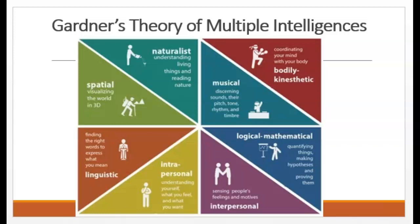Individuals who are high in naturalistic intelligence are more in tune with nature and are often interested in nurturing, exploring the environment, and learning about other species. I am not one of these people — I managed to kill a cactus once. People who are strong in spatial intelligence are good at visualizing things. These people are often good with directions as well as maps, charts, videos, and pictures. I don't own a GPS, but if I've seen a map of something, I can usually get where I'm going.